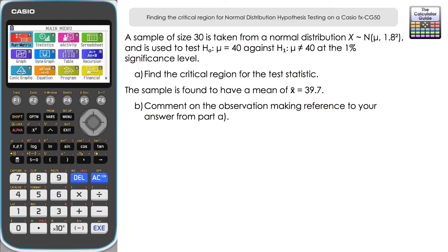For part a, we find the critical region for the test statistic. For part b, given that the sample has a mean of 39.7, we comment on the observation referencing part a. We need the sample distribution, which we can assume is normally distributed with mean 40 and sample variance 1.8² divided by the sample size of 30.